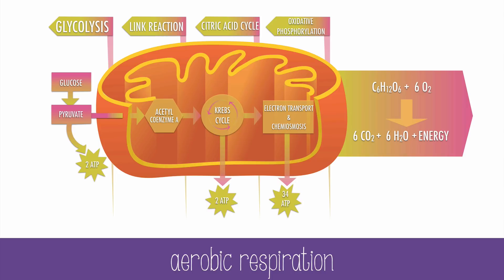So in the end, from one glucose molecule: two ATP were made in glycolysis, two ATP are made in the Krebs cycle, and up to 34 ATP are made with ATP synthase from the hydrogen and electron carriers NADH and FADH₂. Oxygen isn't used until electrons reach the end of the electron transport chain, and that's how water is ultimately formed. Carbon dioxide is made during the link reaction and in the Krebs cycle.